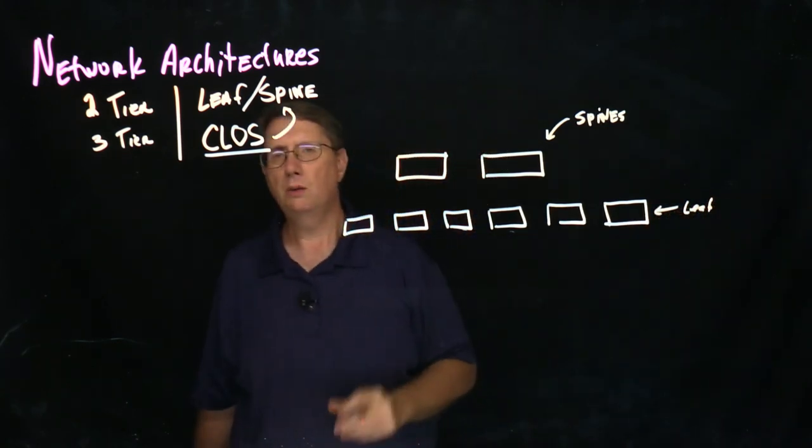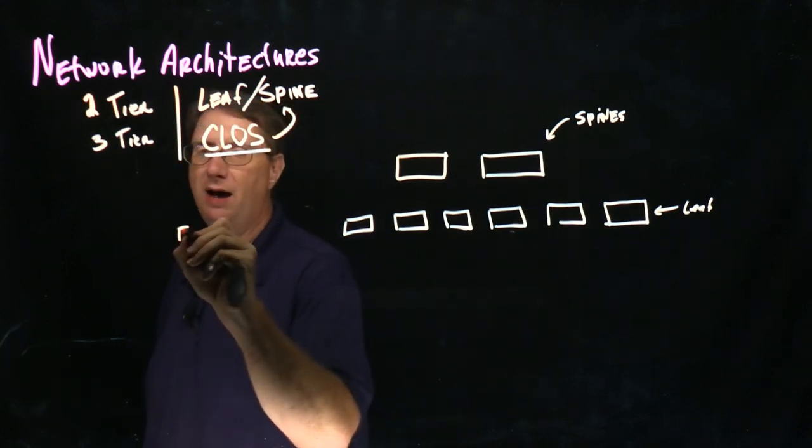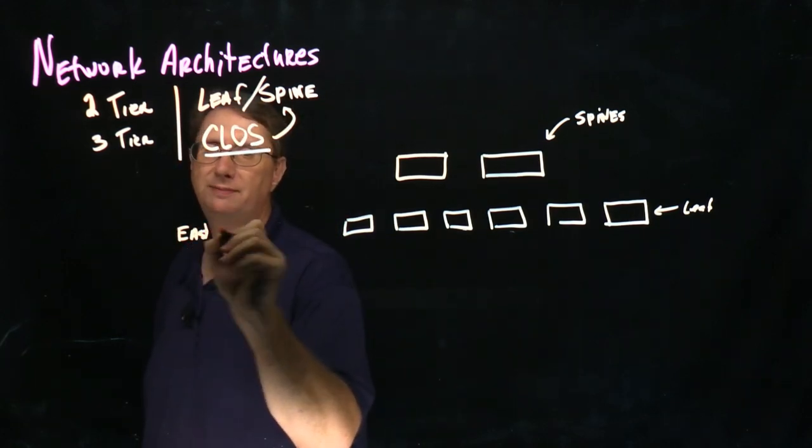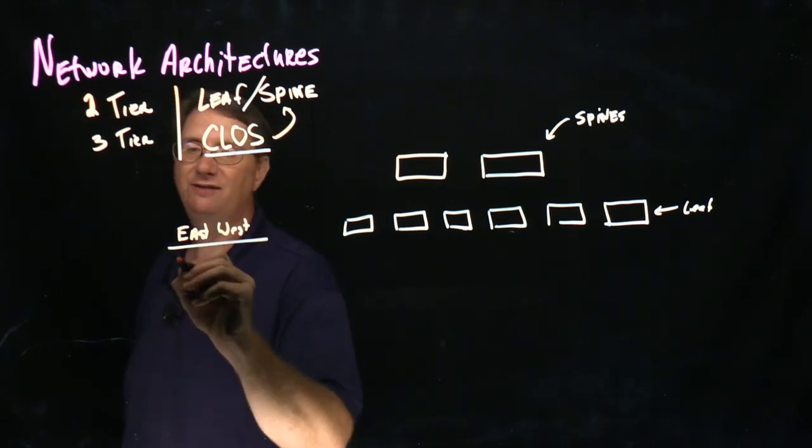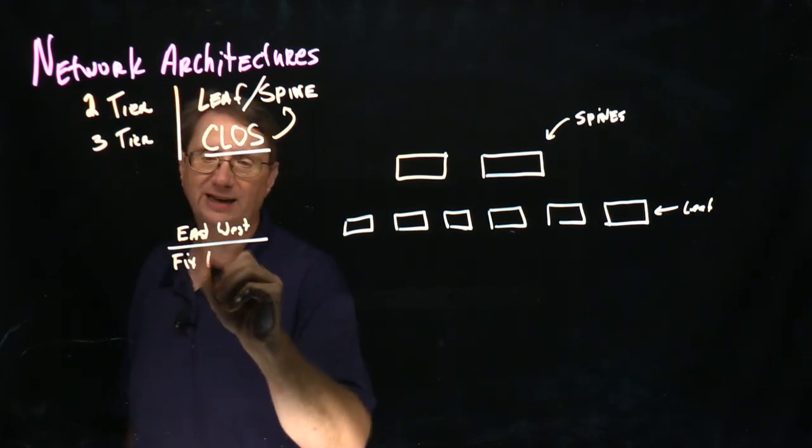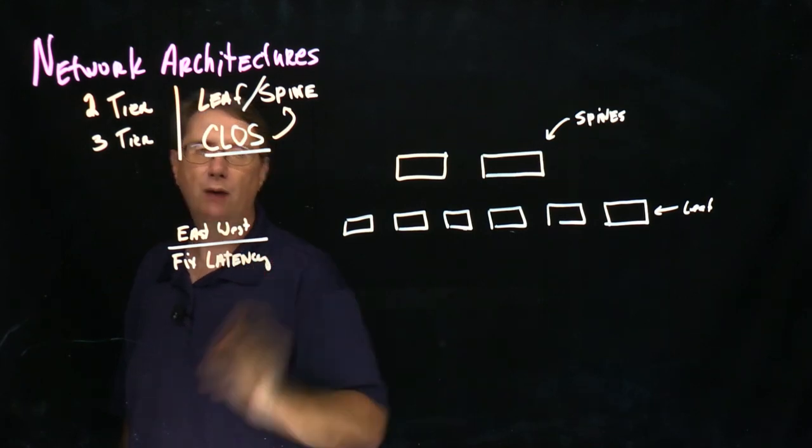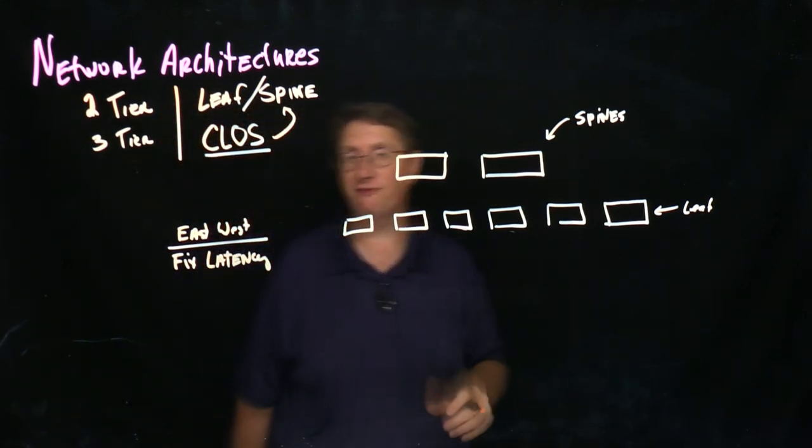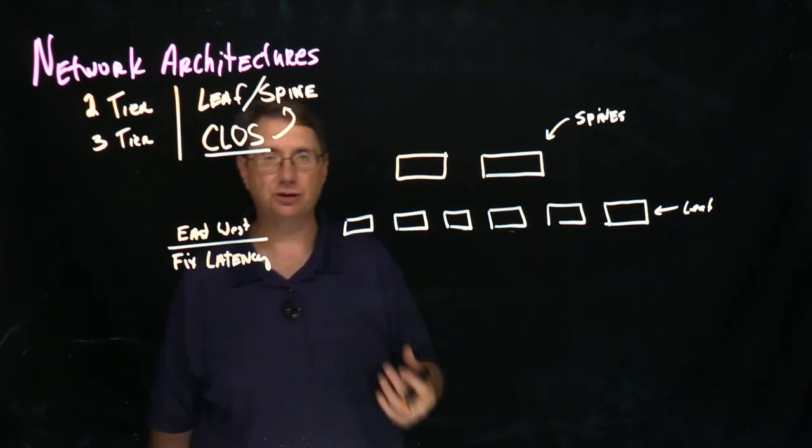Now when it comes to leaf spine design, leaf spine design was optimized to support the concept of east-west traffic. And it was also implemented and designed to give me some control and some ability to be able to fix the latency in my network. And we do that by controlling how far information or how far packets actually travel.